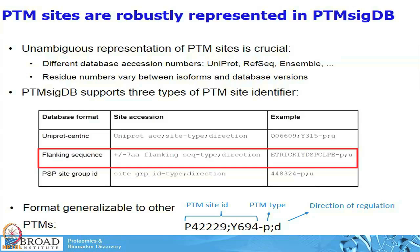Another way to represent phosphosites is via flanking sequences — looking at plus or minus 6 or 7 amino acids around the phosphorylation site. This is a pretty unique identifier when compared across the human proteome. PhosphoSitePlus is also trying to come up with an unambiguous way to group sites across or within protein families. Keep in mind that a residue number might change between isoform A and isoform B — it might be the same site but with a completely different residue number. The site group ID tries to harmonize those kinds of events.